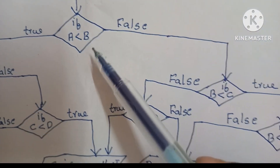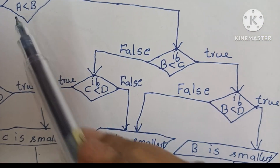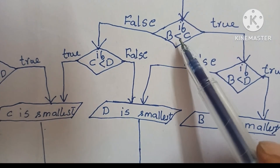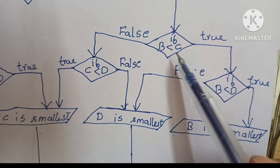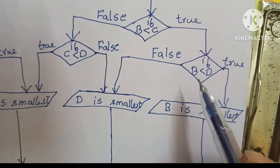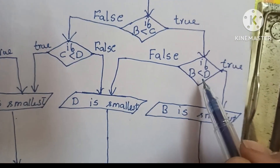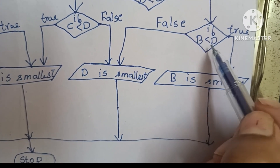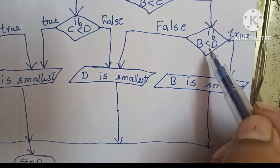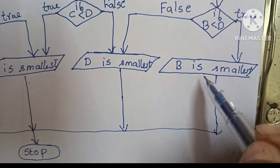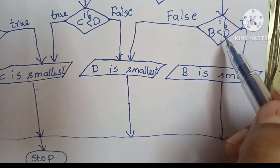If A less than B is false, we compare B with C. If B less than C is true, B is smaller. Next we compare B with D. If B less than D is true, we print B is smallest. If B less than D is false, we print D is smallest.